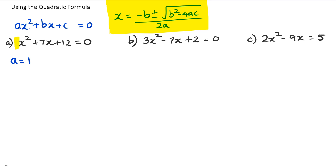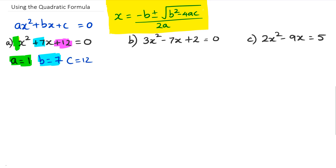Remember that when you have x squared by itself, it's just saying that it's one x squared. Then b is equal to seven because that's the positive seven right there. And then we have our c value which is equal to positive 12. It's really important that you get these three values out, and once you do, it's just a matter of substituting them into the equation.